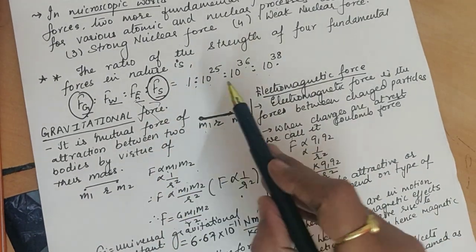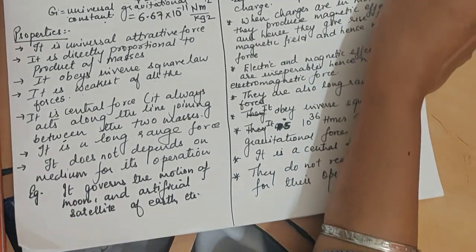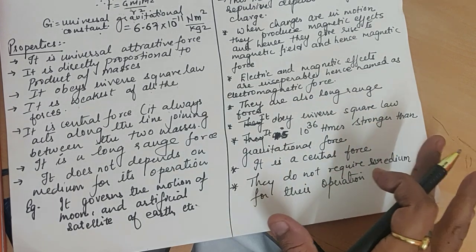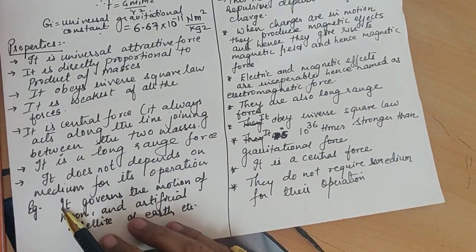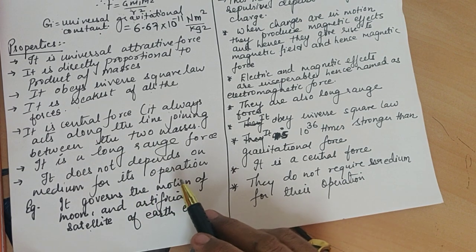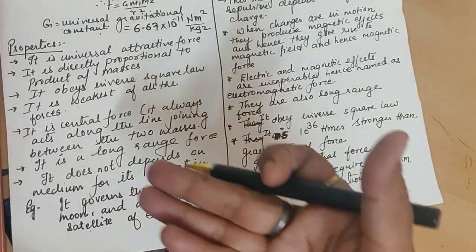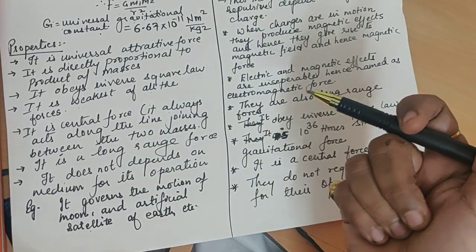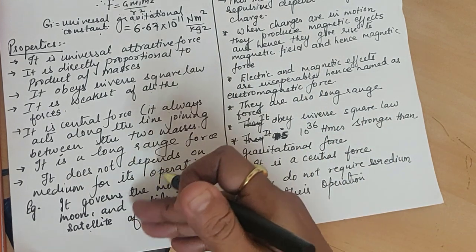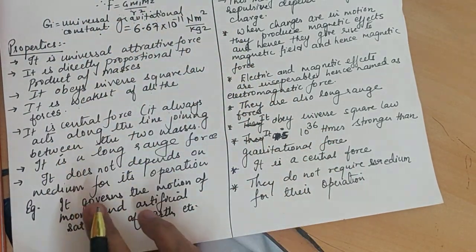Gravitational force does not depend on the medium — it doesn't require any medium to operate. It governs large-scale motions: the Earth revolves around the Sun due to gravitational attraction between them; artificial satellites orbit the Earth due to this same gravitational law; and the motion of the Moon is also governed by this universal law of gravitation.